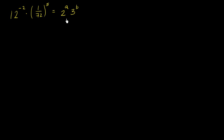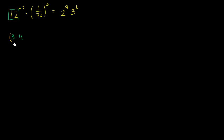Now we can work through this together. What I'm going to do is express numbers like 12 and 72 as products of powers of 2 and powers of 3. So 12 is equivalent to 3 times 4, and all of that is going to be raised to the negative 2 power.